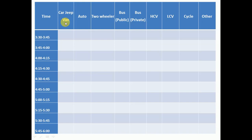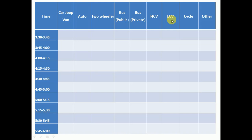The next columns are: car/jeep/van as one category, then auto rickshaw, two-wheeler, public bus, private bus (separated for easy analysis), HCV (high commercial vehicles), LCV (low commercial vehicles), cycle, and the last column — others, like ambulance, fire engine vehicles, and other exclusive vehicles. You can prepare this Traffic Volume table before going to conduct the traffic volume count survey.